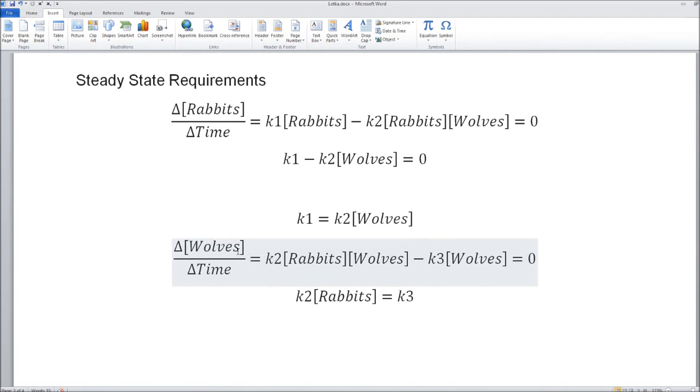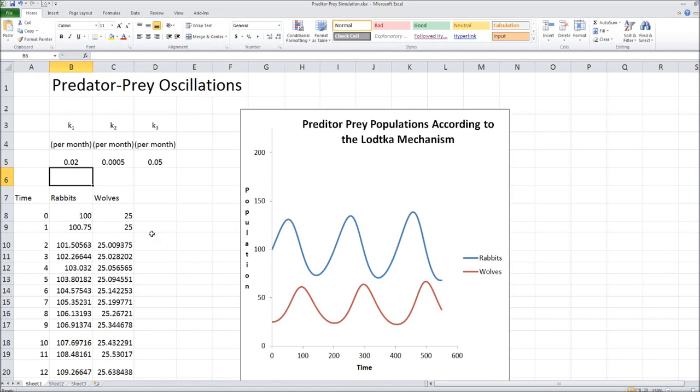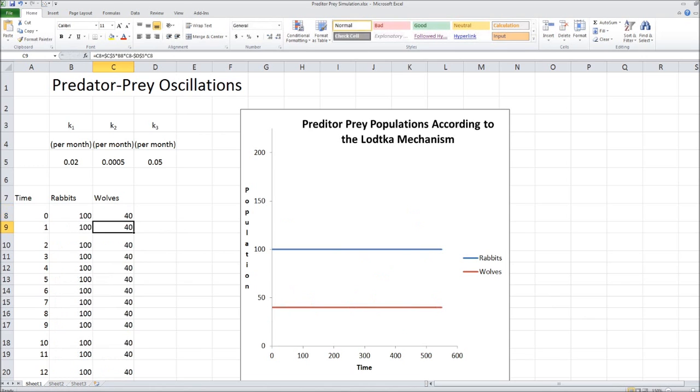And the equation for the wolves set that equal to 0, we get k2 times the rabbits equals k3. And I've set it up so that I can easily make this change on the spreadsheet, but you can verify it. So I'm going to just, I just have to really change the wolf population to 40. And it makes those two equations that I just mentioned hold. And you can see when I do that, the rabbit population stays constant at 100 and the wolf stays constant at 40.